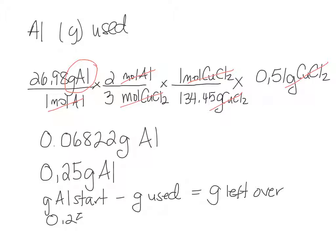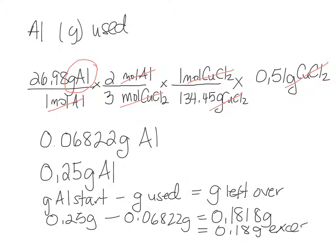0.25 grams minus the amount used will be the amount left over. Rounding to two sig figs, we have 0.18 grams of aluminum in excess.